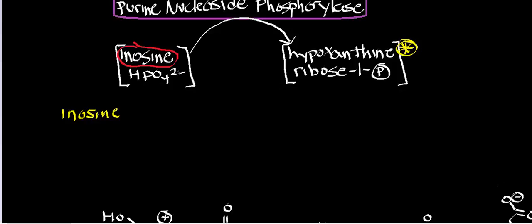But let's say that you started with deoxyadenosine monophosphate. You would use a phosphatase to cleave off the 5' phosphate, in which case you'd get deoxyadenosine. And then you'd react that with adenosine deaminase, and you'd get deoxyinosine. This reacts with purine nucleoside phosphorylase and still gives you hypoxanthine. But the other product would not be ribose-1-phosphate; it would instead be deoxyribose-1-phosphate. So we have inosine and deoxyinosine.